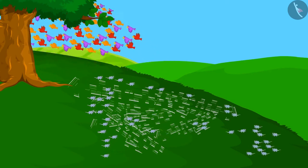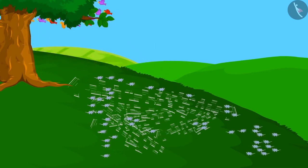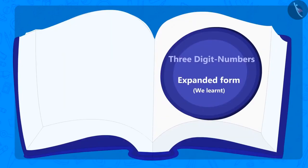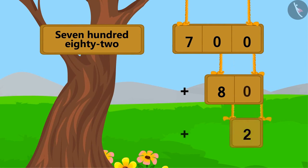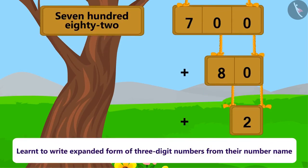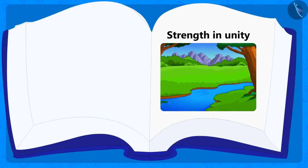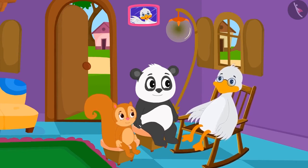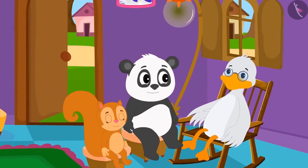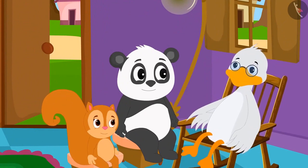So children, you saw that there is a lot of strength in unity. We learnt to write the expanded form of three-digit numbers with the help of number names. We also learnt that there is always a lot of strength in unity. In the next video we will cover some common mistakes related to expanded form.